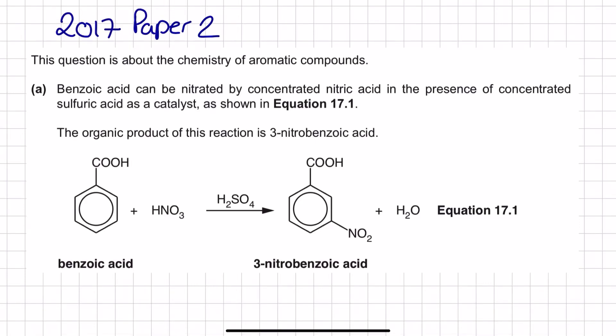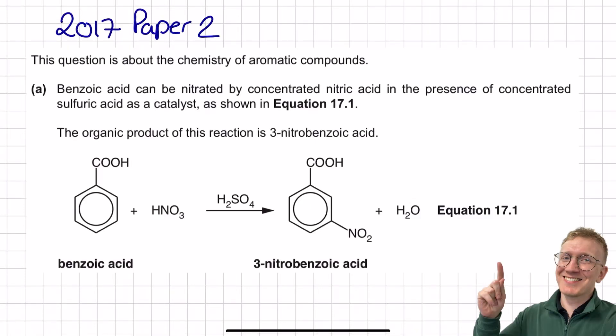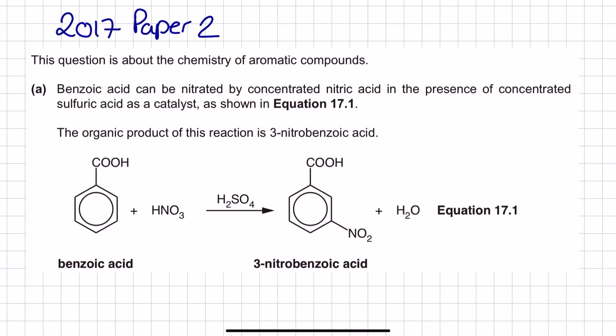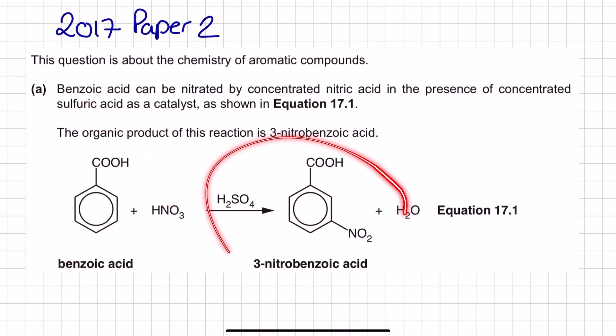Here we have an organic chemistry exam question from the 2017 paper 2 exam on the OCR-A specification in A-level chemistry. This exam question is all about the nitration of an aromatic ring. Specifically, we have benzoic acid forming 3-nitrobenzoic acid in this reaction equation.